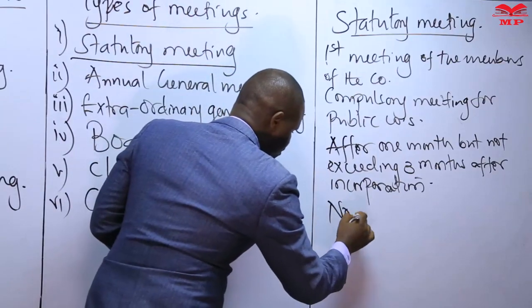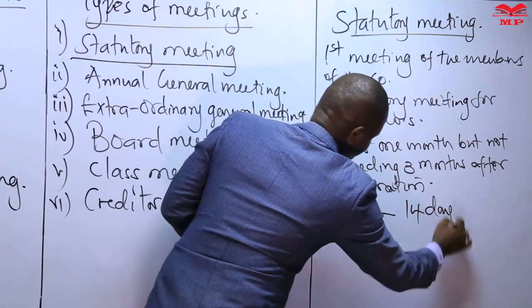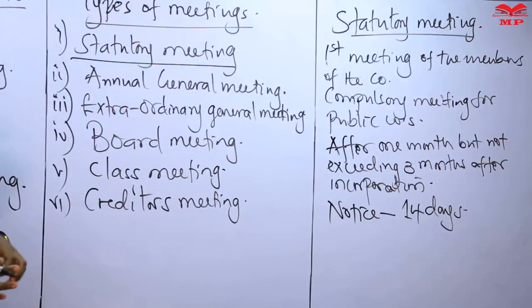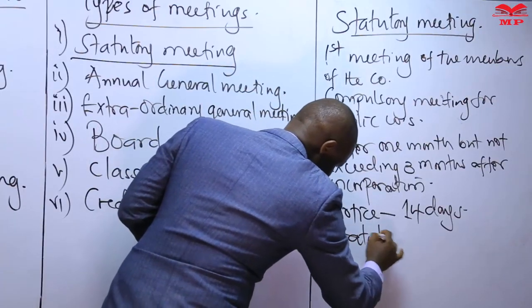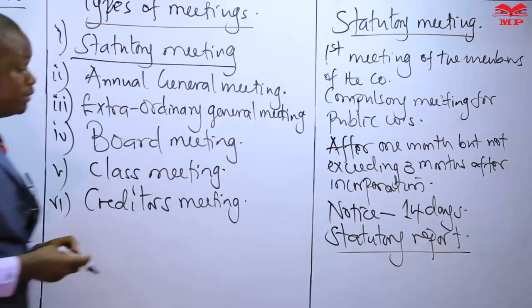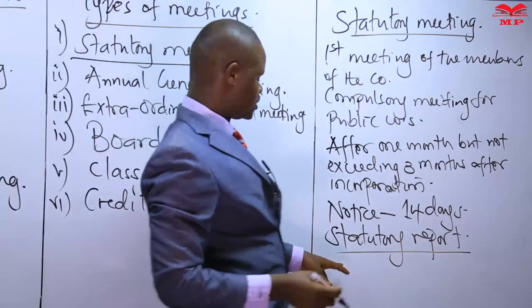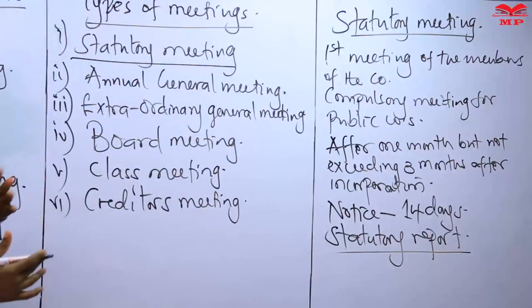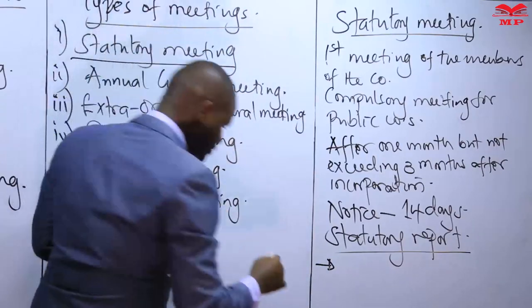This meeting is convened by a notice giving the members 14 days to the date of the meeting. The objective of this meeting is to discuss what is known as the statutory report — the company's directors present the statutory report to the members of the company.